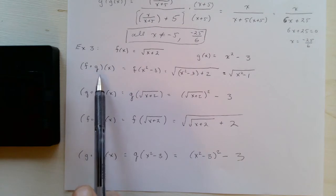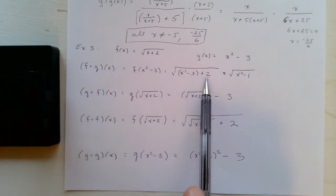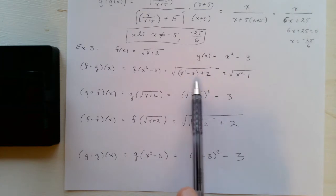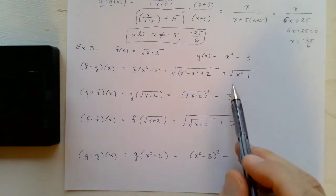f circle g of x is going to be the square root of x squared minus three plus two. In this case we can simplify this: negative three plus two is minus one, so it's the square root of x squared minus one.